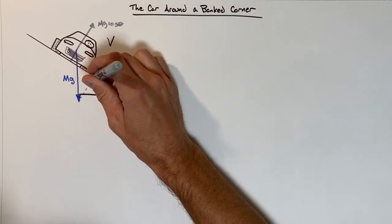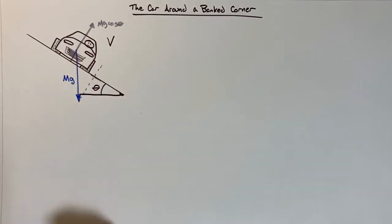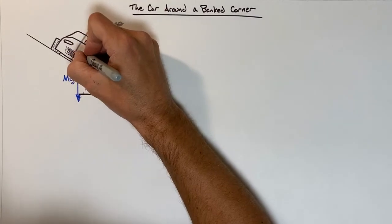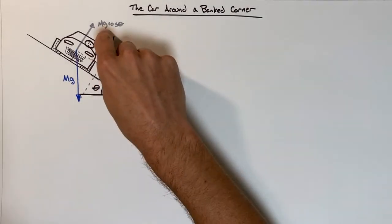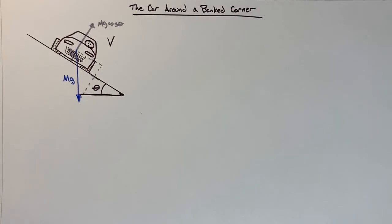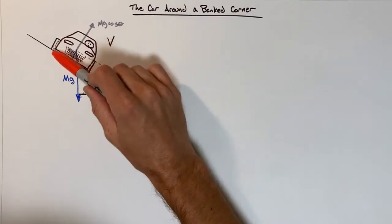Effectively, this is simply the component of mg that is perpendicular to the hill. Then we have the component parallel to the hill, which we call Fd. In this problem, Fn is not mg cosine theta, and I'll explain why.